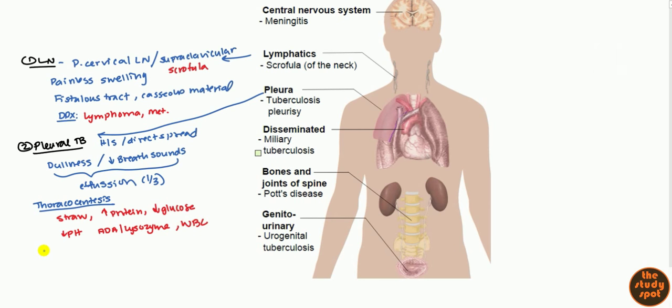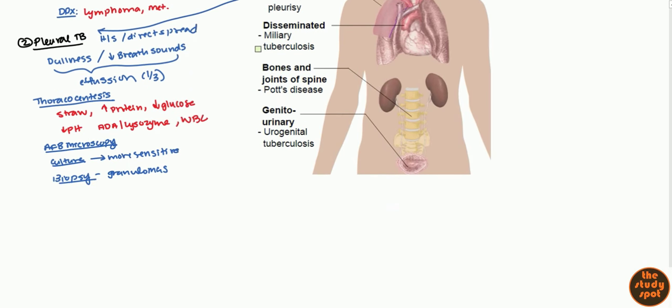What you'd also want to do when you take the fluid is microscopy, acid-fast staining to see if you can identify the TB through a microscope. You could do a culture. Culture is more sensitive, however it does take longer. And finally, you can do a biopsy of the actual pleura to show granulomas as well as the actual pathogens.